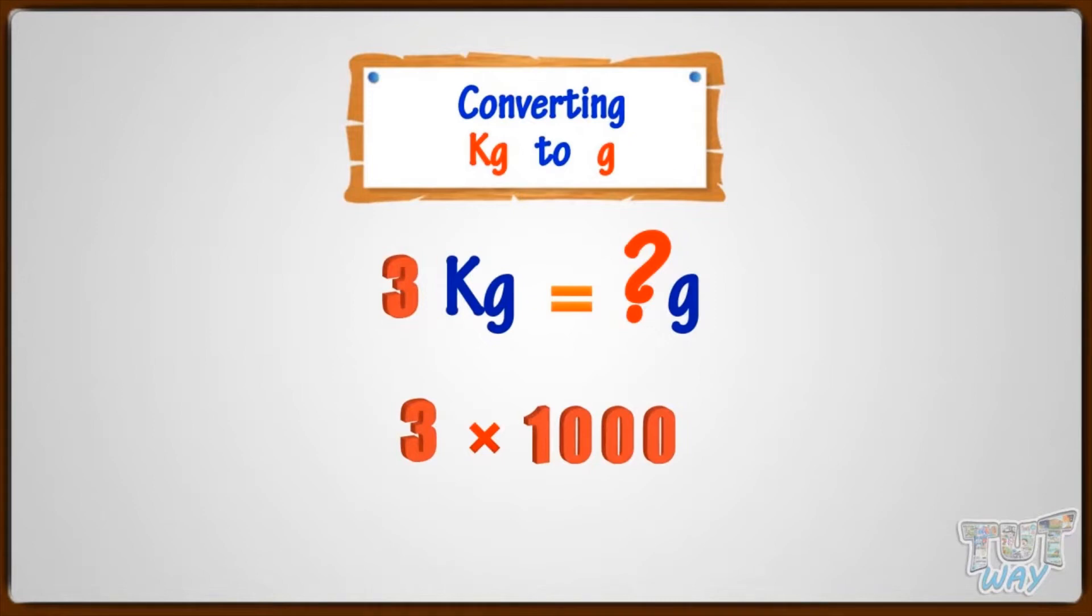Whenever we have to convert kilograms to grams, we always multiply with 1,000 to convert kilograms to grams. So, three kilograms equals three thousand grams.